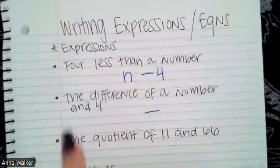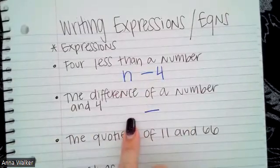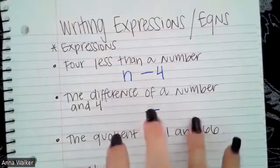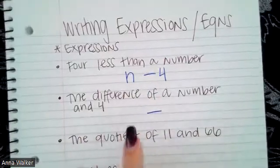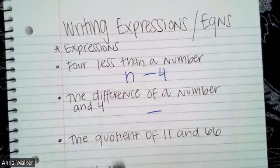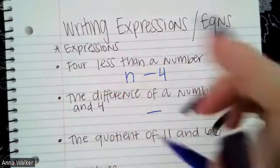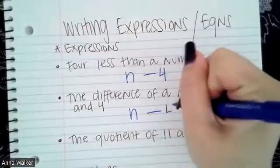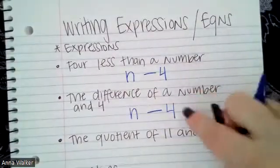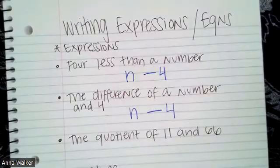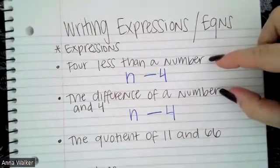So when they tell us the difference, the product, the quotient, to figure out which number is going to go first and which is going to go second in the problem, we're going to follow the order that they write it in. So the difference of a number and four is going to be N minus four, a number and four. So these two end up being the same math statement, just written two different ways in English.